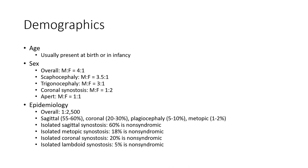Sex ratios by type: Scaphocephaly male to female is 3.5 to 1. Trigonocephaly male to female is 3 to 1. Lambdoid synostosis male to female is 1 to 2. Coronal synostosis male to female is 1 to 1.